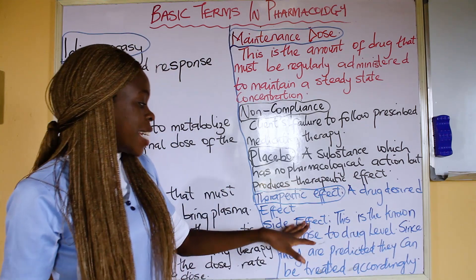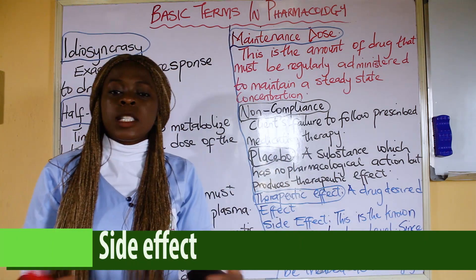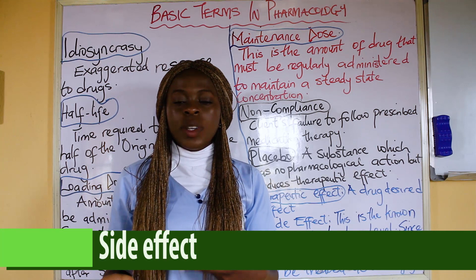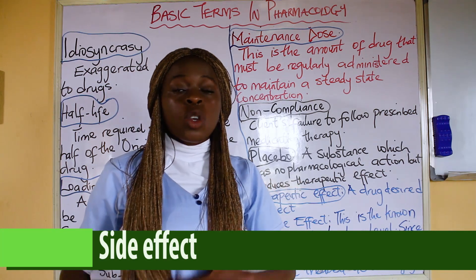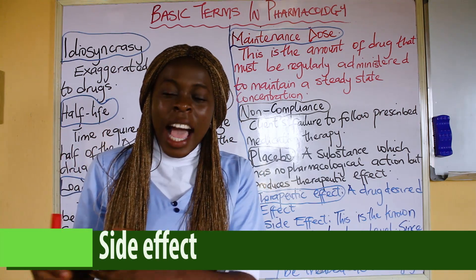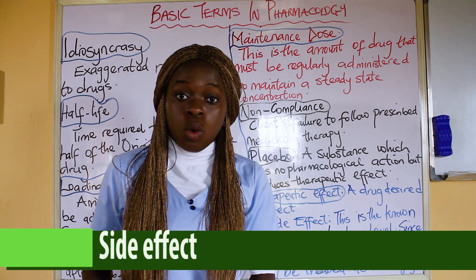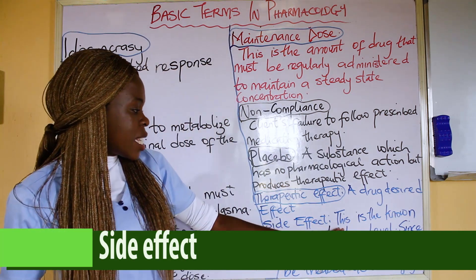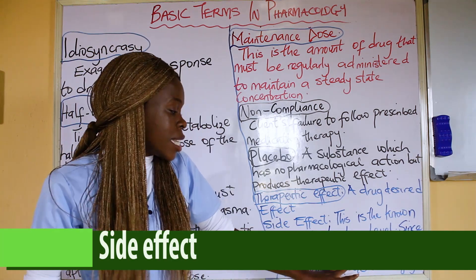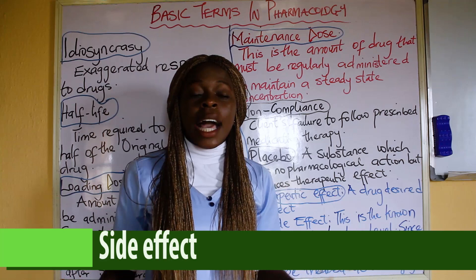The last term is Side Effect. Remember we talked about Idiosyncrasy, which is an adverse effect. Side effects, by contrast, are expected. For example, when diclofenac is given in a hospital, it is known that the side effect of diclofenac is gastric ulcers. So you see nurses administer diclo alongside omeprazole because they know this is the side effect from NSAIDs, and to counter that side effect they give omeprazole, which is an ulcer drug. Since side effects are predicted, they can be treated accordingly.